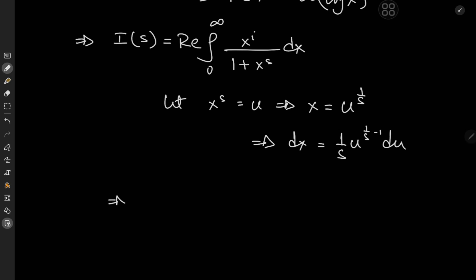And we see that the limits of integration are clearly not bothered, so this implies that i of s equals the real part of 1 by s times the integral from zero to infinity of u to the i by s times u to the 1 by s minus 1 divided by 1 plus u, du.